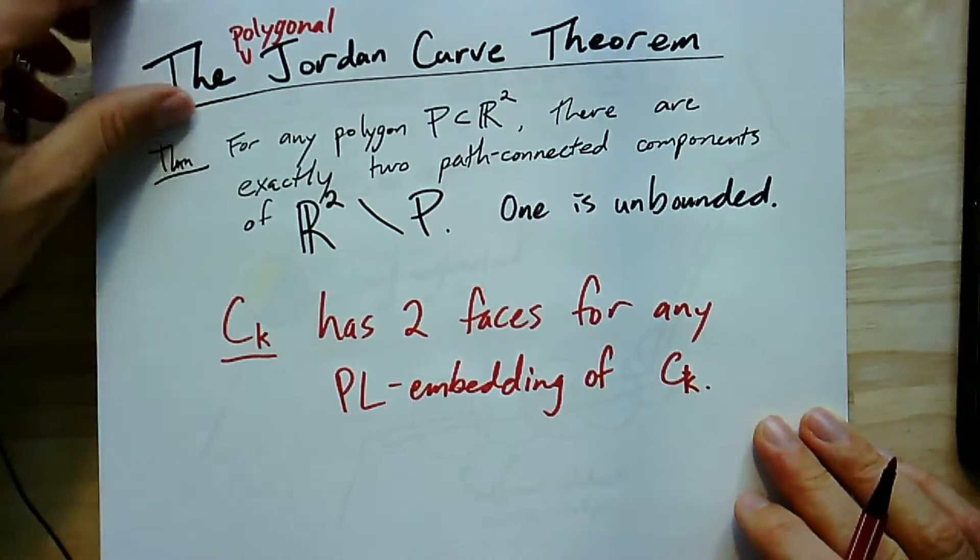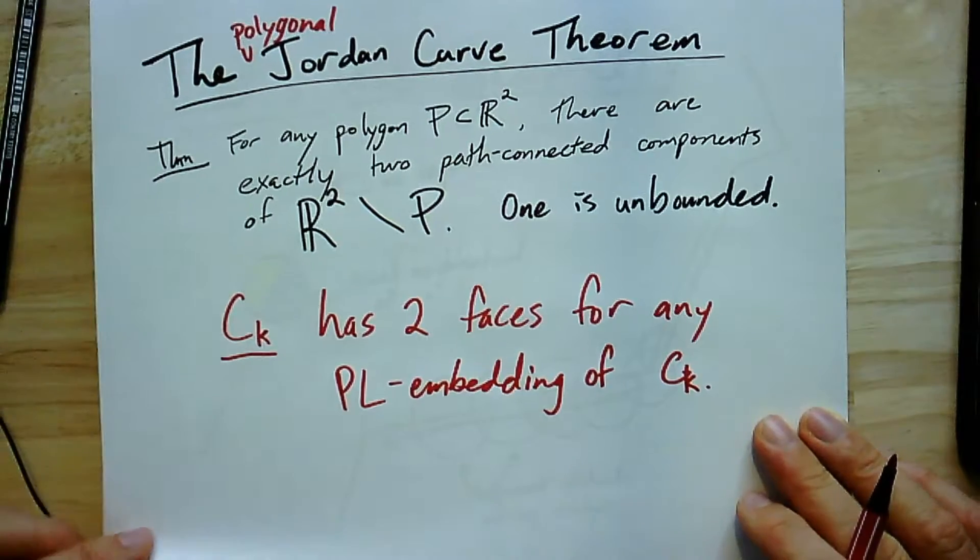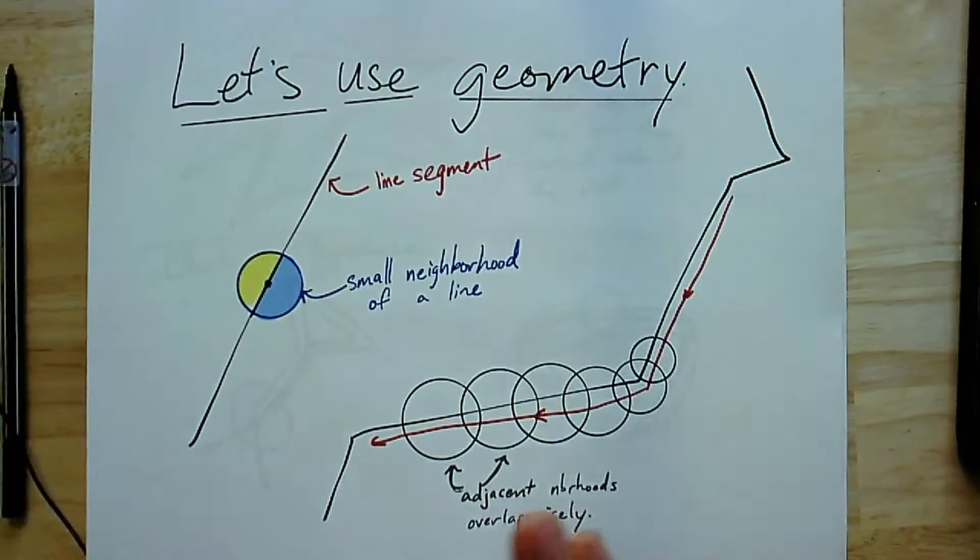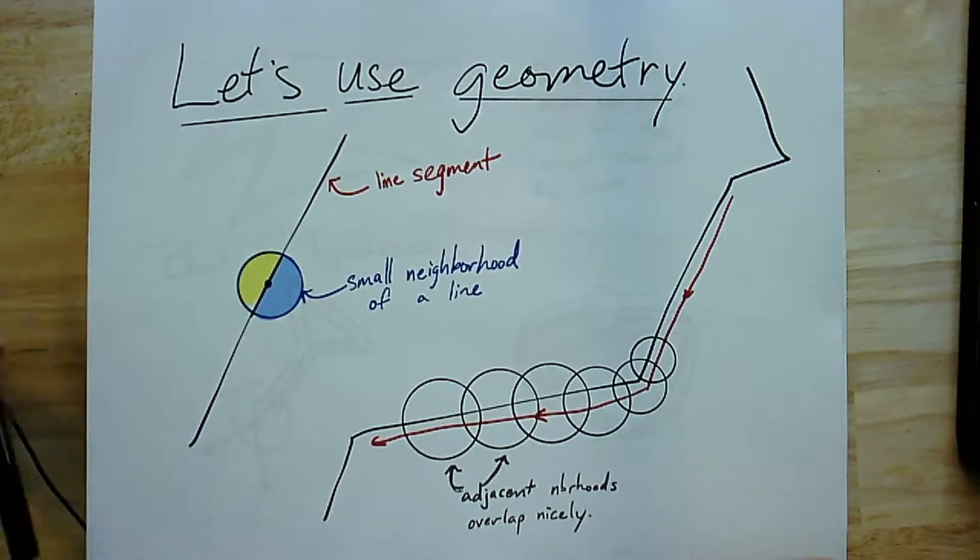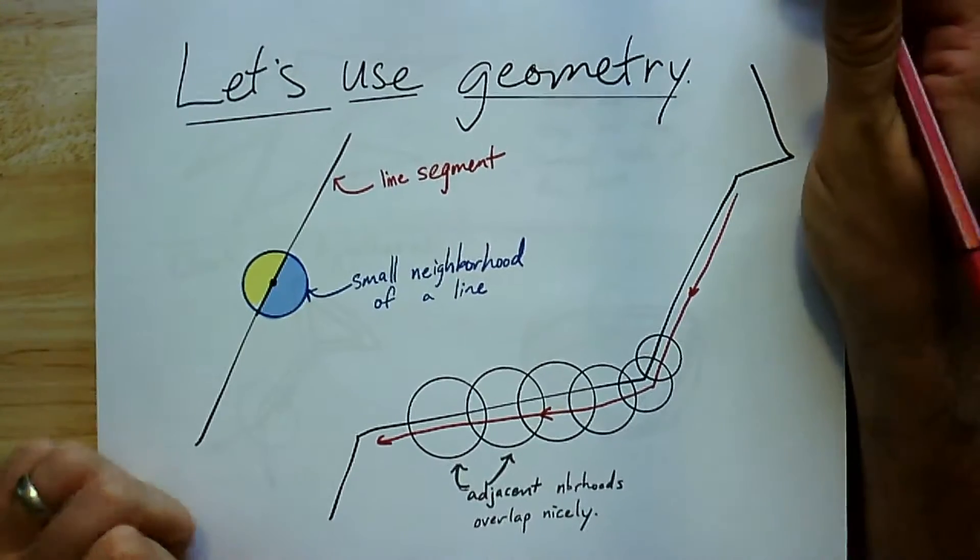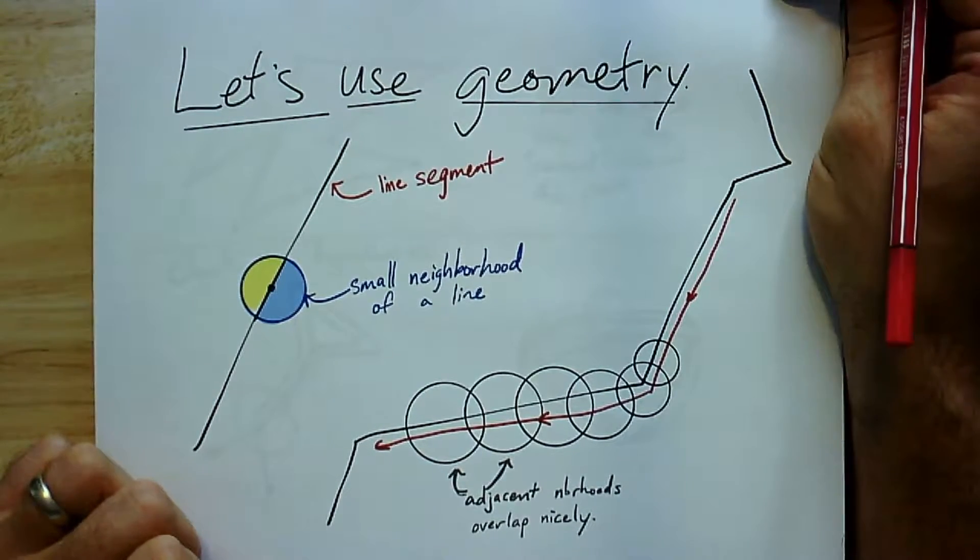And this is true for any piecewise linear embedding of C_K. So let's jump into it. In order to prove this, we are going to depend on some facts that really come from geometry. So we're going to use some ideas of geometry to make the topology easier.